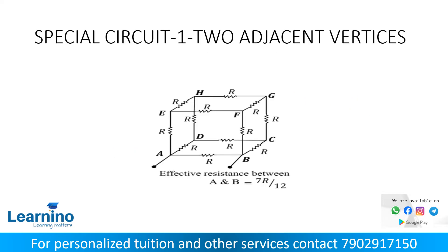Next are special circuits, which appear in competitive exams. If we connect resistances on all sides of a cube and take the resistance between two adjacent vertices A and B, the equivalent resistance will be 7R by 12.